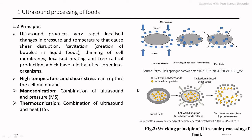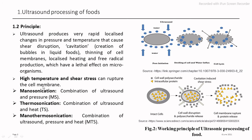By combining ultrasound with temperature and pressure, we get different processing modes. The combination of shearing stress and high temperature can directly rupture the cell membrane. Manosonication is the combination of ultrasound with pressure. Thermosonication is the combination of ultrasound and heat. Manothermosonication is the combination of ultrasound, pressure, and heat. Depending on the specific requirement, we can combine ultrasound with pressure and temperature using either destructive or non-destructive methods for specific processing or preservation actions.